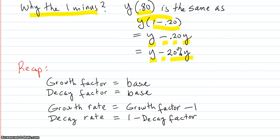So the total recap of the two growth factor and decay in comparison is growth factor is the base of the exponential. Decay factor is also the base of the exponential. The growth rate, though, is the growth factor minus 1. And the decay rate is 1 minus the decay factor.